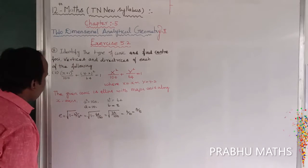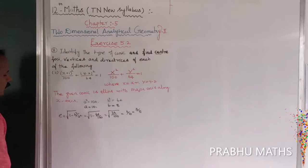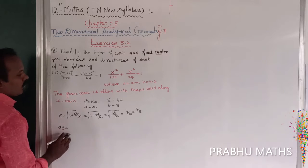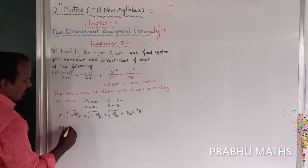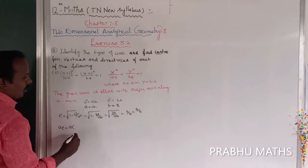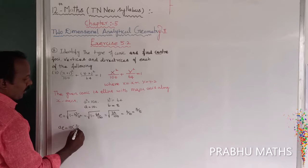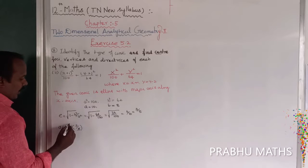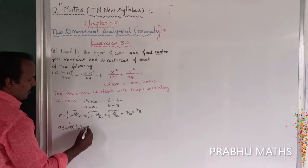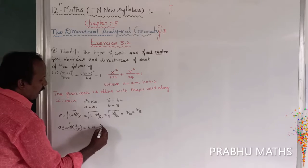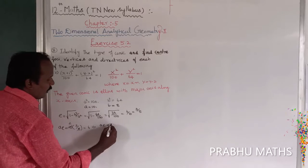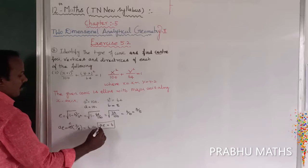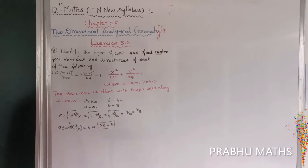Next, find the value of ae: a is 10, so 10 × (3/5) = 6. Therefore ae = 6.